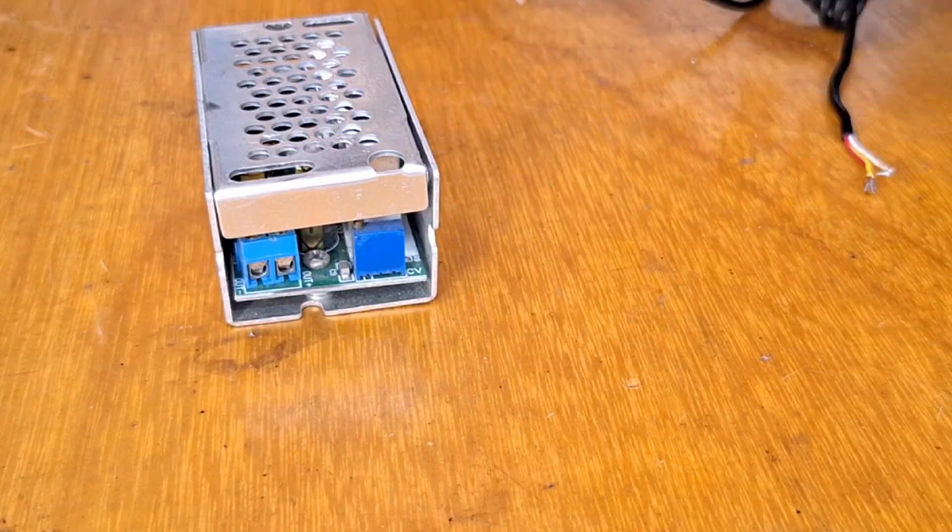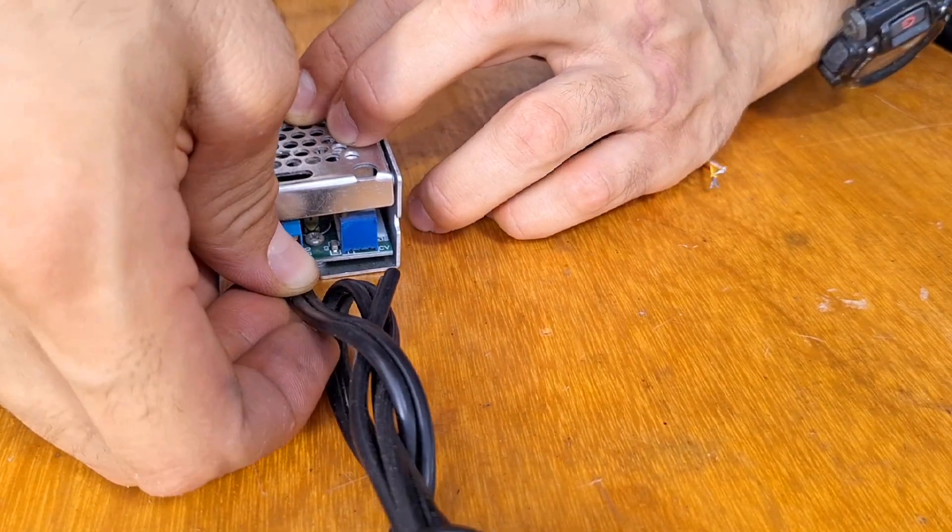Typical screw connectors have a flap that protects wires, but can impede connecting thicker wires once tightened.